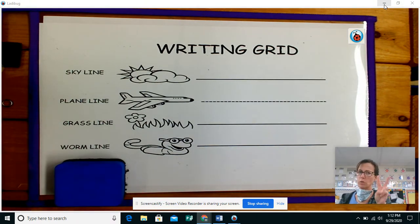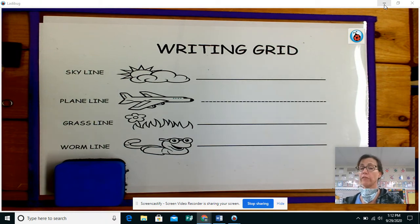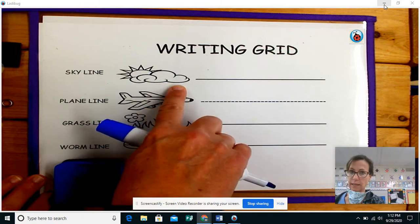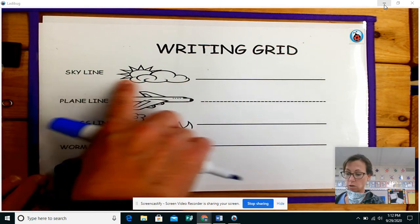So I want to show you, not to be confusing, but I'm going to show you capital M two different ways because you might see it this way. Okay, so I have my mask on. So we're going to start at the skyline. All capital letters start on the skyline.